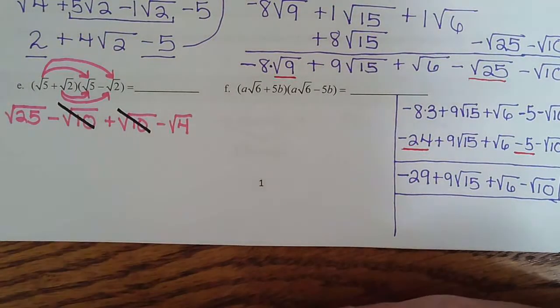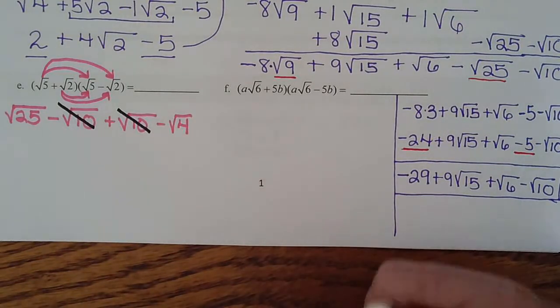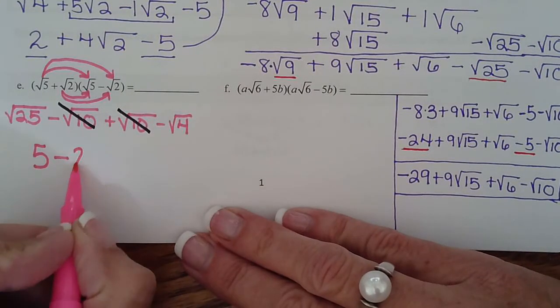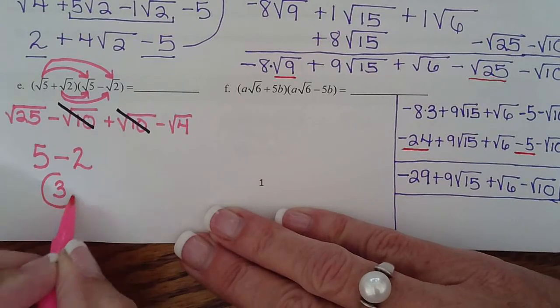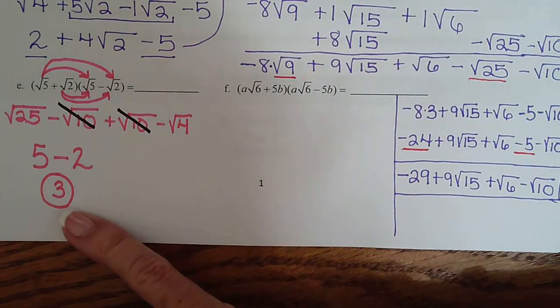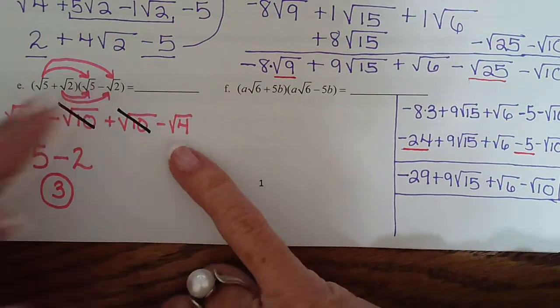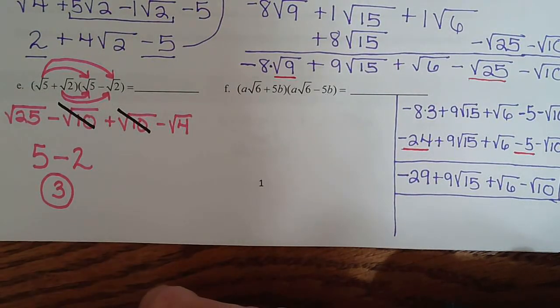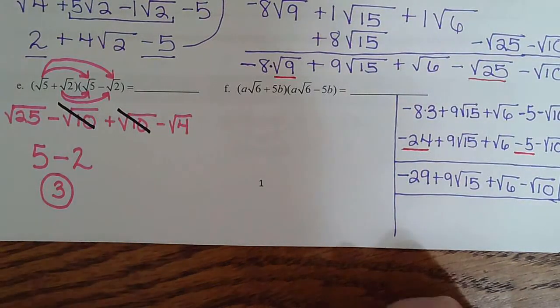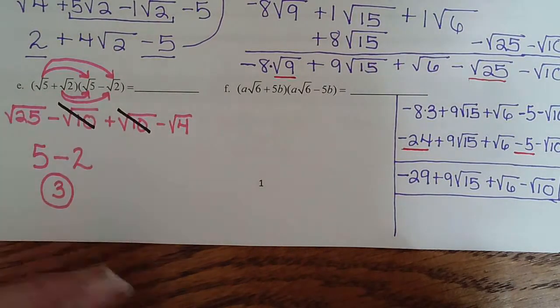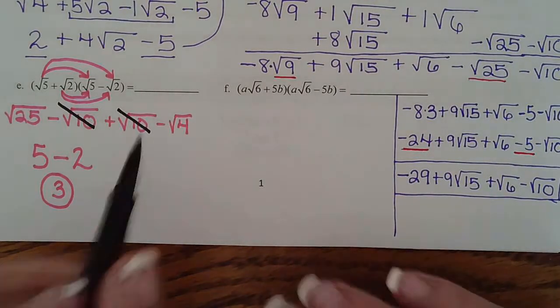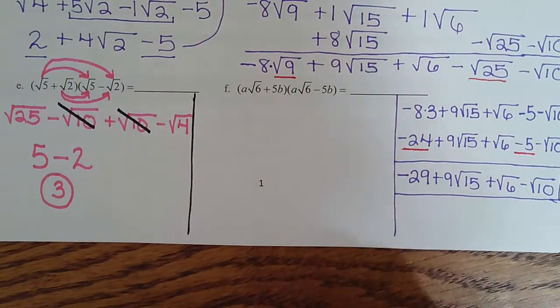When you multiply with radicals, rarely are you done on the first step. There's almost always going to be radicals to simplify. Negative radical 10 and positive radical 10 are 0, and that's what was supposed to happen because they're conjugates. Then this simplifies and this simplifies. Square root of 25 is 5, minus square root of 4 is 2. So we simply get the answer 3. And you'll see why this is really important coming up.